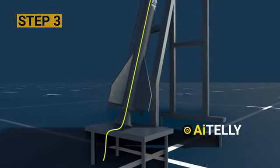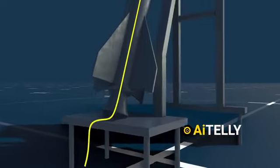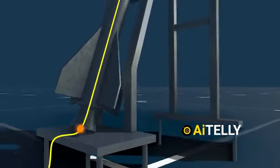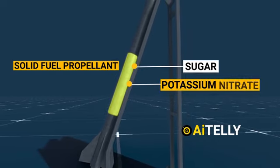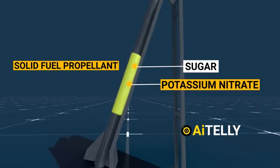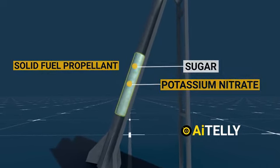Step 3: A wire connected to a battery is affixed to the base of the rocket. When ready, it ignites the solid fuel propellant composed of sugar and potassium nitrate, a mixture that can be derived from agricultural fertilizer.